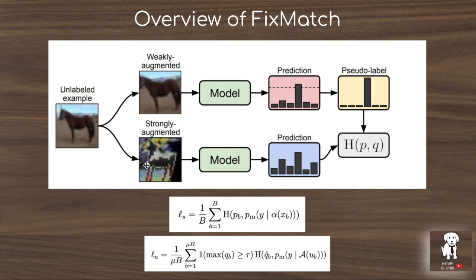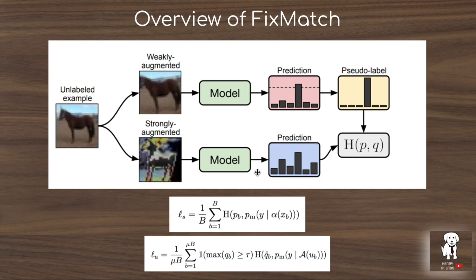Usually you think of this as comparing the strongly augmented image with the original data point. In their pipeline, they take the weakly augmented image and run the model over it to get a prediction of class labels. If a given class prediction exceeds a threshold — shown in the loss function as the predicate max q_b being greater than the threshold — this will be set to one and you include the cross-entropy between the prediction on the strongly augmented image and the pseudo-label in the loss function.